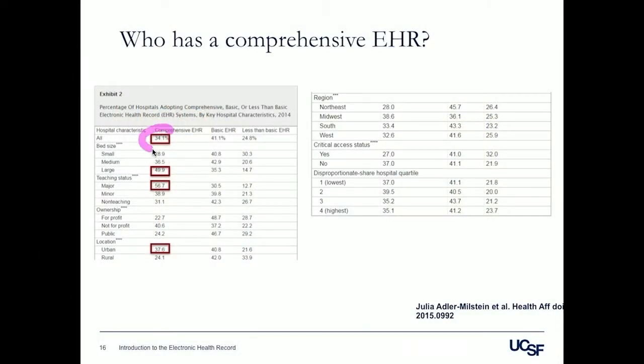A more recent study from around 2015 looked at which types of hospitals can adopt a comprehensive EHR. About a third of hospitals have one, and they tend to be large academic teaching hospitals in urban areas. Hospitals with less than basic EHR functionality tend to be in rural areas and tend to be safety net hospitals or critical access hospitals. As providers at UCSF, we often have to go the extra mile to get a complete picture of patients coming from safety net or rural hospitals — something we need to be cognizant of.